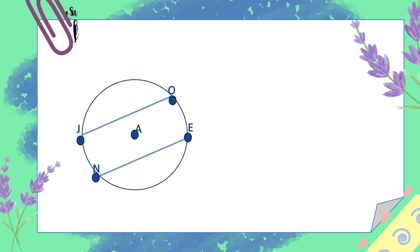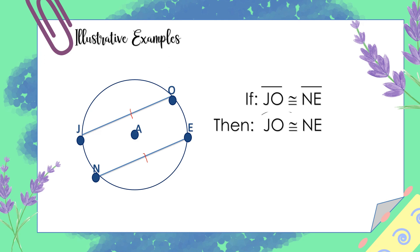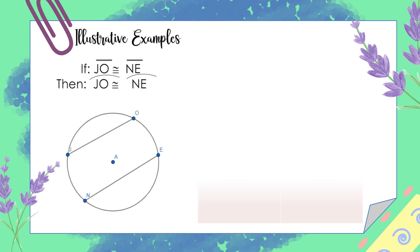Let's have some illustrative examples. In circle A, if segment JO is congruent to segment NE, then arc JO is also congruent to arc NE. Now, let's prove that arc JO is congruent to arc NE in circle A.